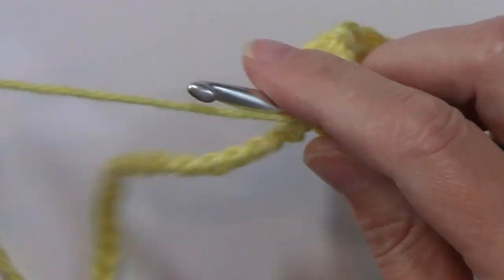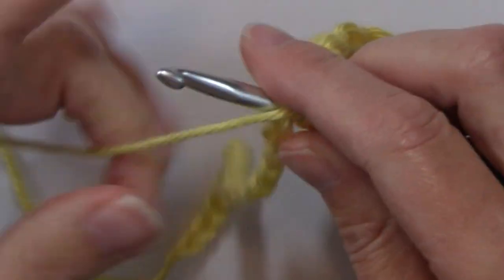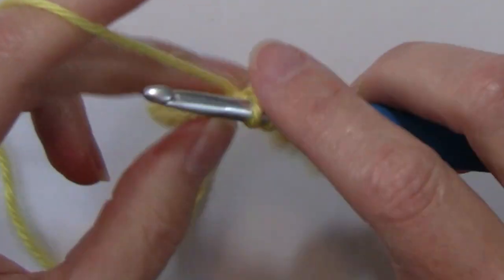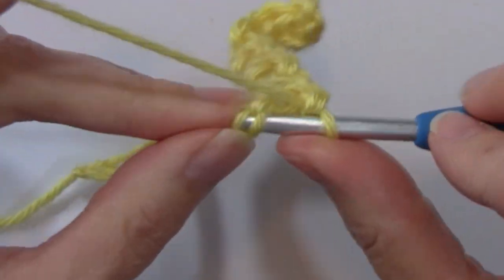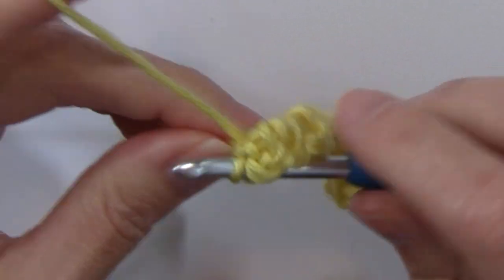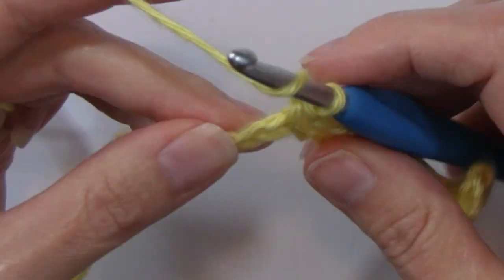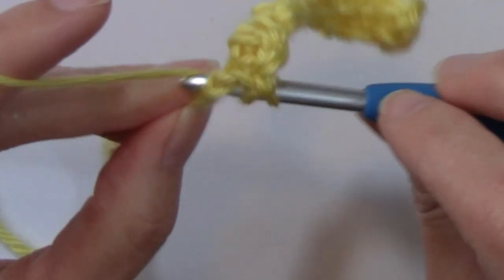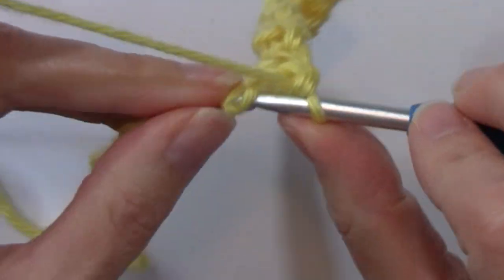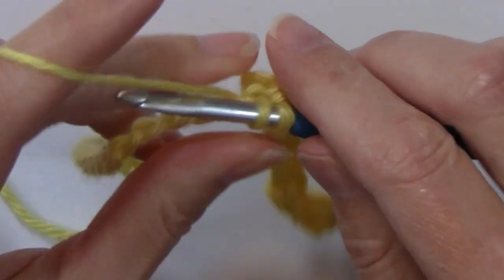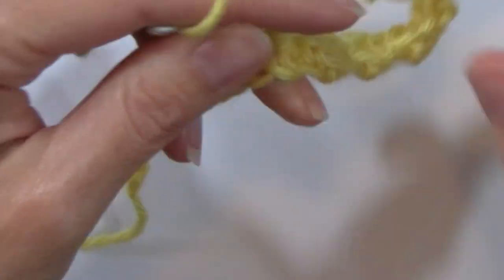And that up-down, some people call this the up-down stitch because you're going to that short single crochet and then up to the double crochet, the tall stitch. And it really creates an interesting look as you can see.